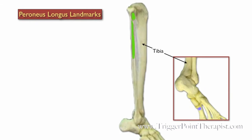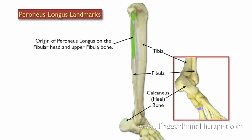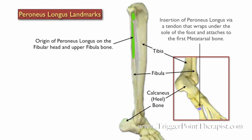Let's take a look at the landmarks for the Peroneus Longus. We have the tibia, the fibula, and the calcaneus. The Peroneus Longus originates on the fibular head and the upper part of the fibula, and it inserts via a tendon that wraps under the sole of the foot and attaches to the first metatarsal bone.